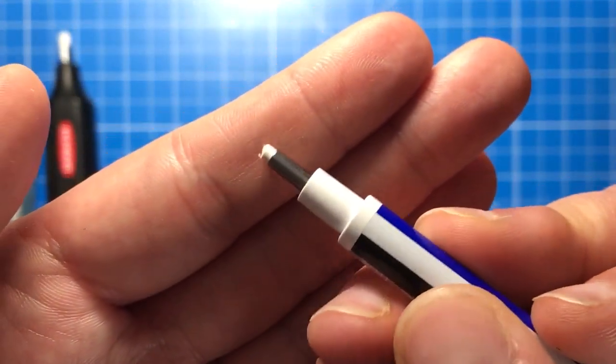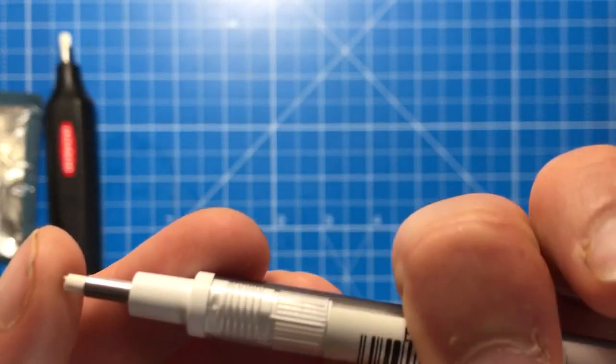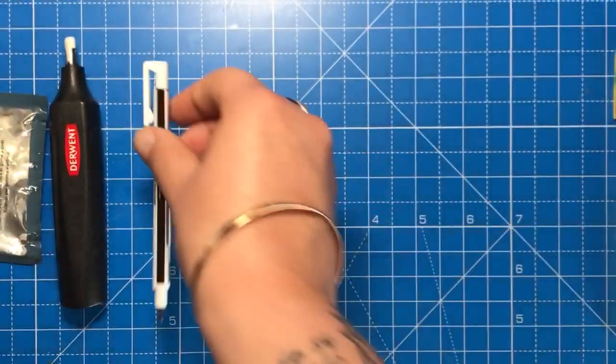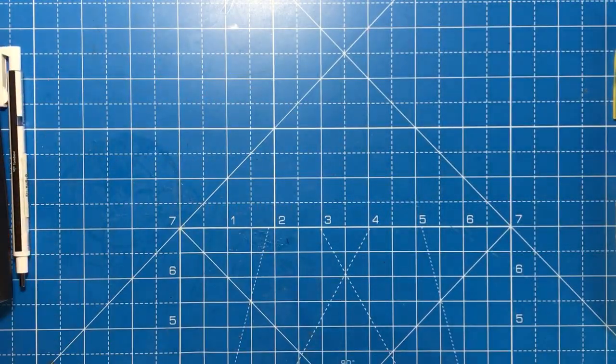This is for maybe when you've gone outside the lines and you just need to get right up to the edge of that line. It's incredibly fine and very easy to get into tiny spaces. Those are the erasers I use on a regular basis.